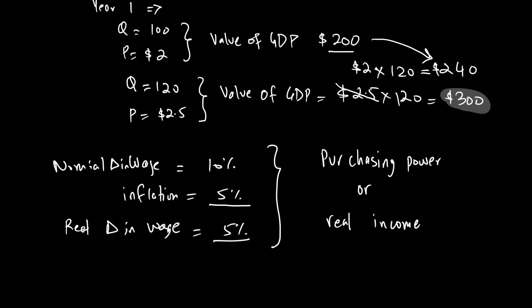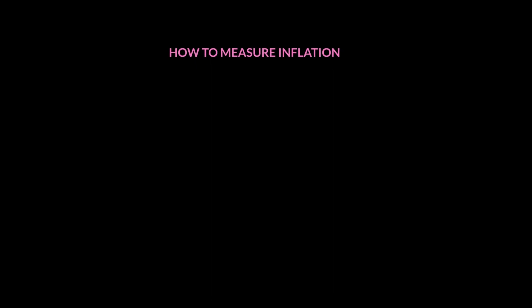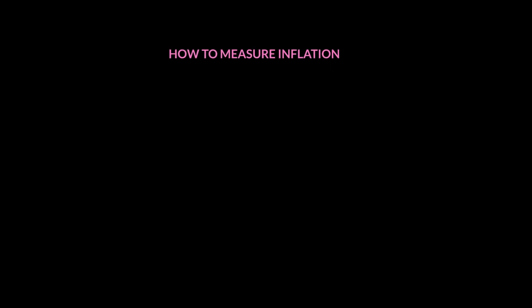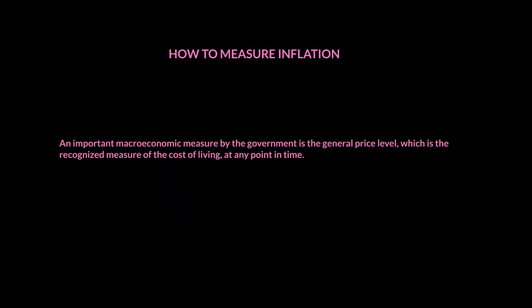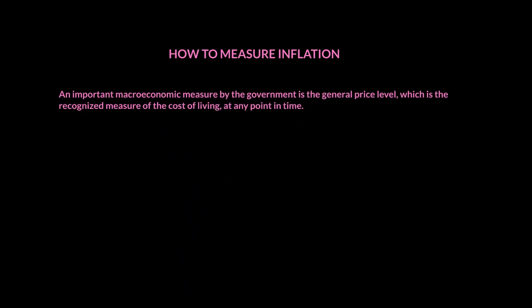Now let's look at how we measure inflation. Knowing the general price level is important for the government because it tells us the cost of living. If I'm buying 5 items at $5 each, I'm spending $25. But next year, if because of inflation those five items cost $10 each, my cost of living doubles to $50.